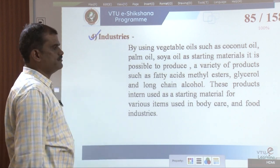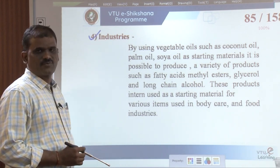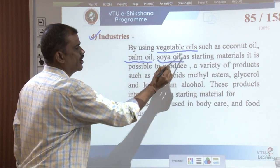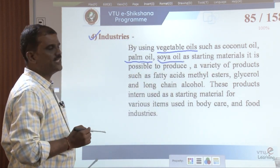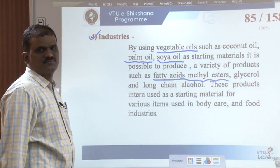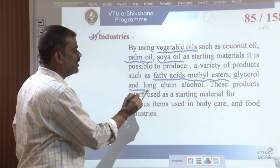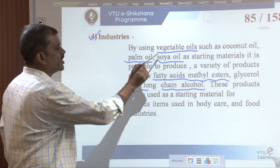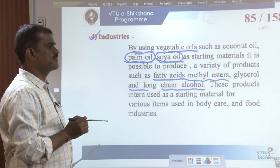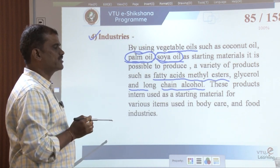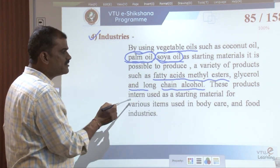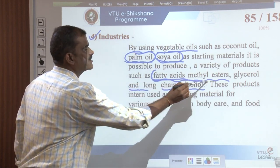The next application of green chemistry is in industries using vegetable oils such as coconut oil, palm oil, and soya oil as starting materials. It is possible to produce a variety of products such as fatty acid methyl esters along with glycerol and long-chain alcohols. When these non-edible oils are treated with alcohol, they form biofuels along with glycerol, and these biofuels are called fatty acid methyl esters.